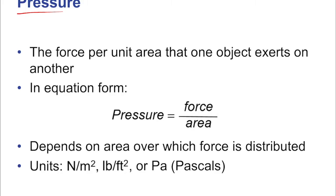Pressure is force normalized by area — essentially that means you're dividing by the area. For example, if I wanted to talk about the total force that a swimming pool exerts on the bottom of that pool, I'd need to know the square footage and the depth. But if instead you divide by the area of the pool, then you have a pressure value that would be the same for every pool of a particular depth, regardless of the total volume.